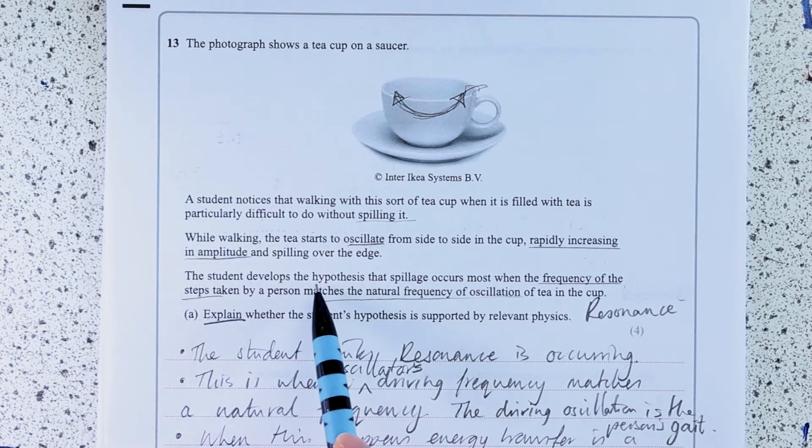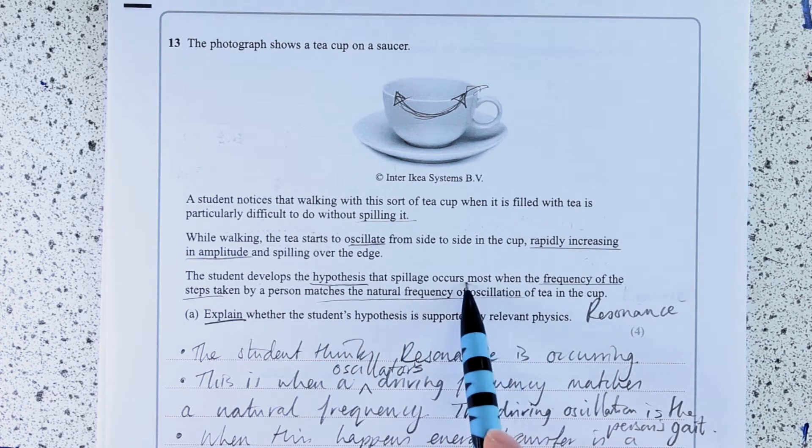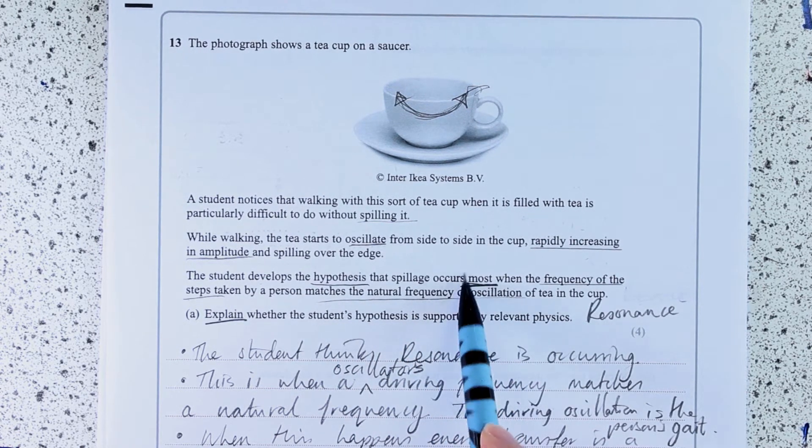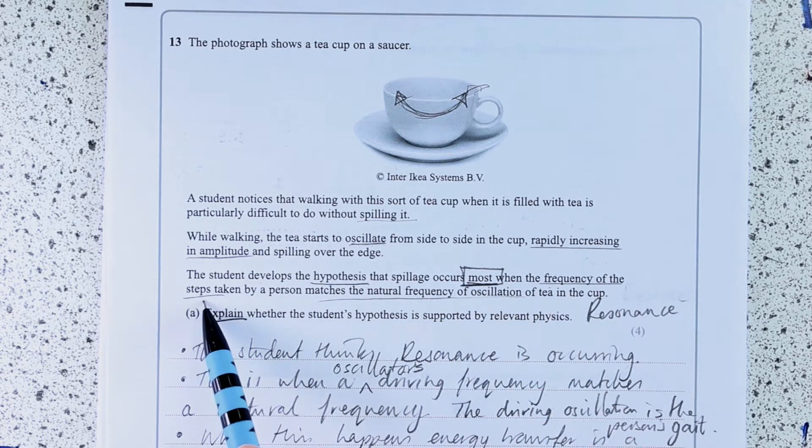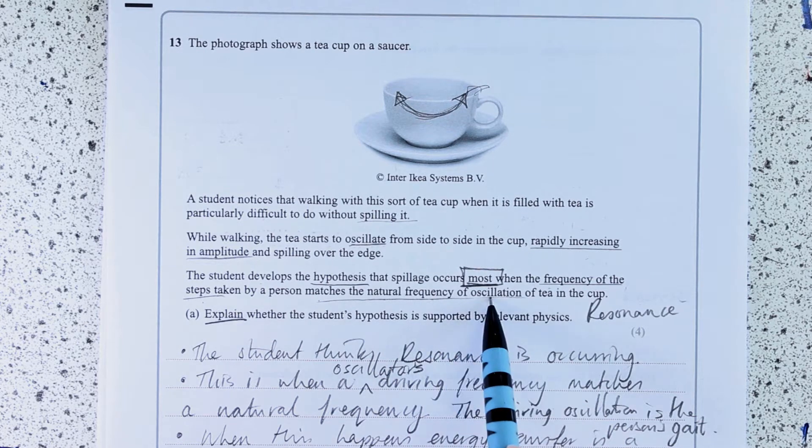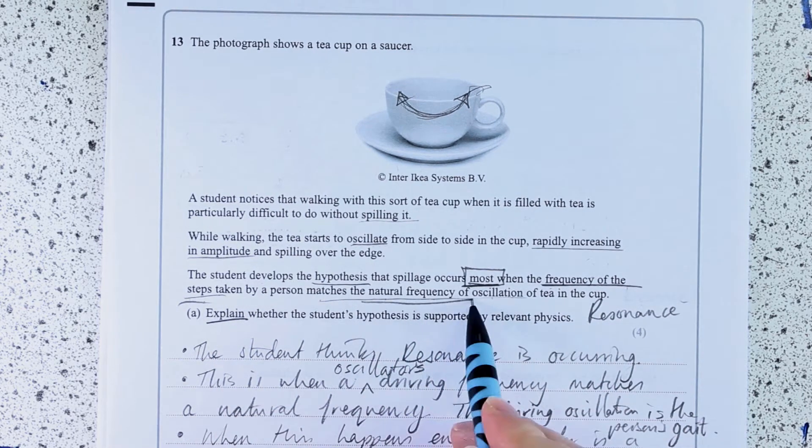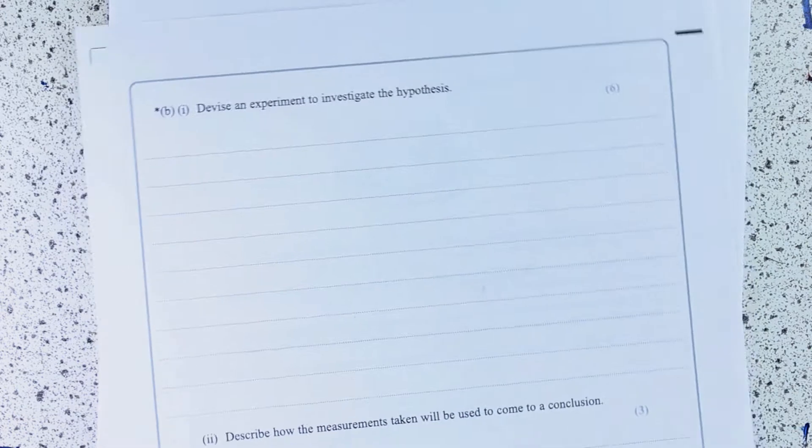So what's his exact hypothesis? He thinks that the spillage occurs most when the frequency of the steps matches the natural frequency of the oscillation. So we need to measure the frequency of the steps and the natural frequency of the oscillation.